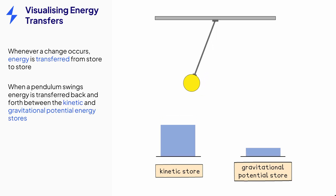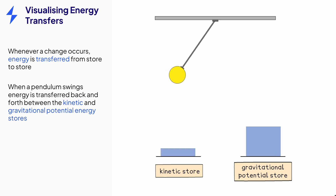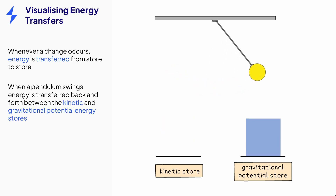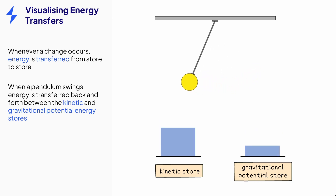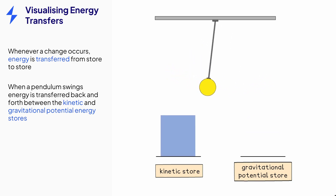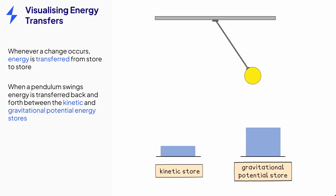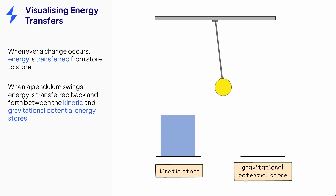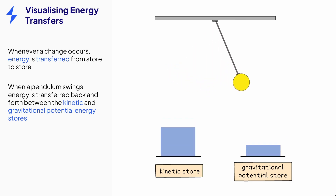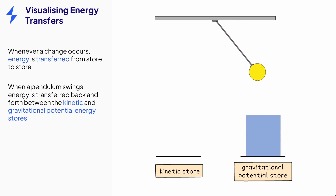When a pendulum swings, energy is transferred from the kinetic store to the gravitational potential store, and back to the kinetic store, then back to the gravitational potential store, and so on. The total amount of energy in the system is constant, but the energy is being transferred from store to store within the system.